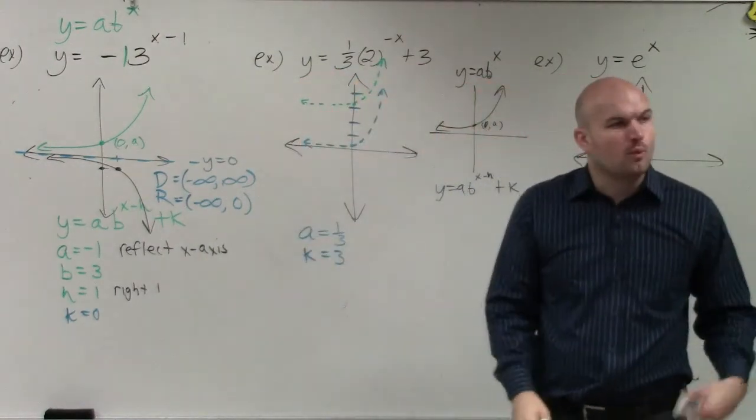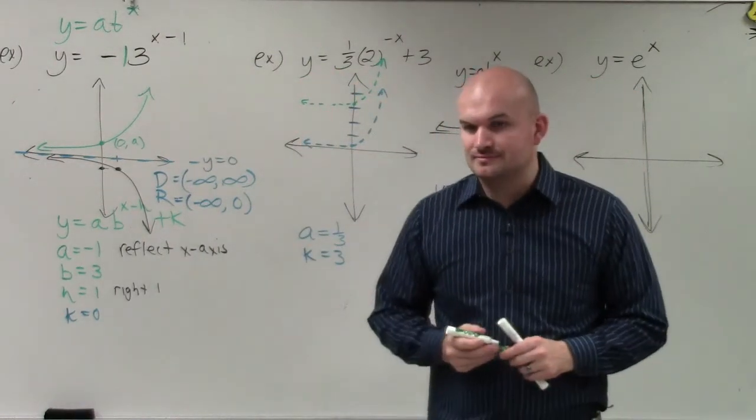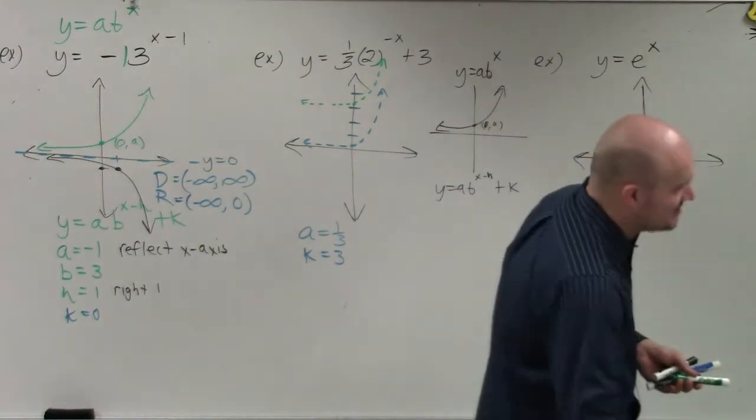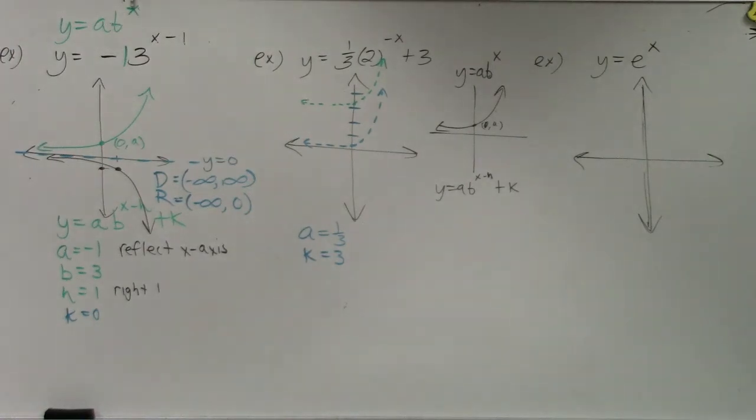Now, here's an important thing. What also moves up 3? The asymptote. You have to remember there's that asymptote in there. Because I'm going to tell you guys, this is where you're going to get confused, especially when you start doing domain and range.